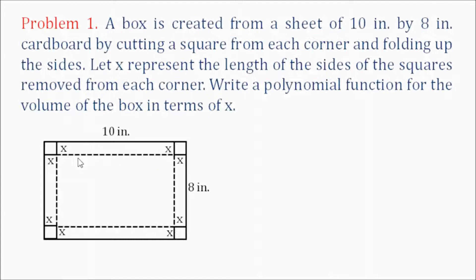What will be the length of our box? The answer is 10 minus 2x. Because the length of the cardboard is 10 inches, and we have a square cut with side x on one corner and also a square cut on the other corner with side x. So we have x here and x here — that's 2x. So we subtract that, giving us 10 minus 2x as the length of our box.